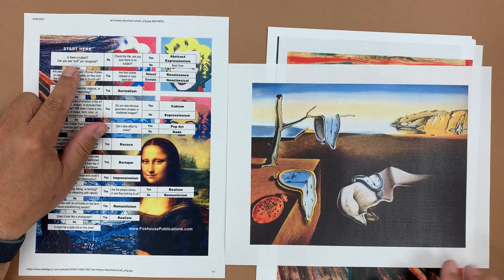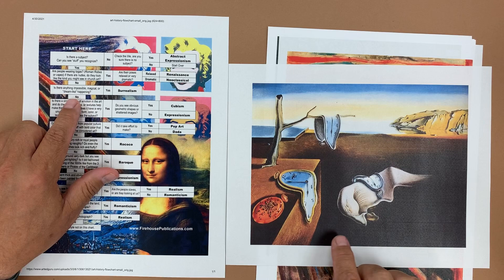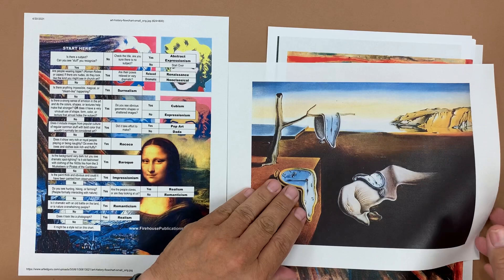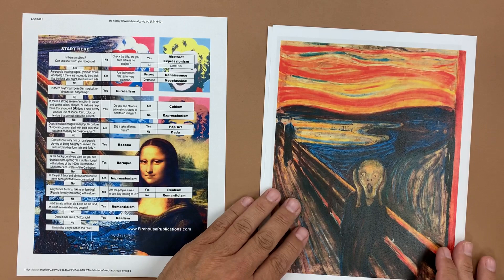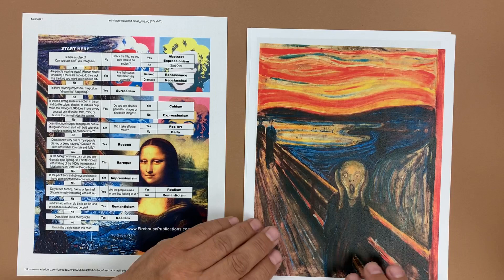We look at Persistence of Memory by Salvador Dalí and do the same thing. Certainly there is stuff we recognize. We don't see any togas. Is there anything impossible, magical, or dreamlike happening? Yes. So it's Surrealism. As students do this more and more, they become quicker and don't need to use the flowchart anymore to figure out what schools of art are.